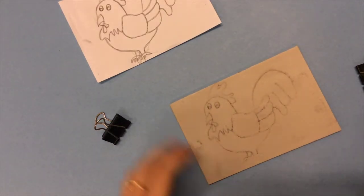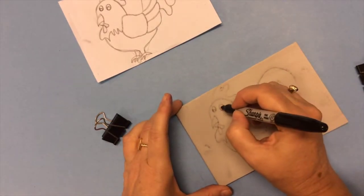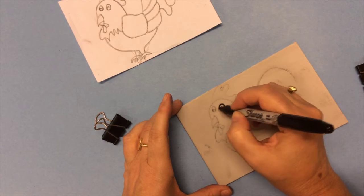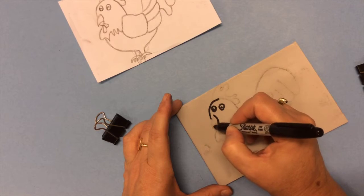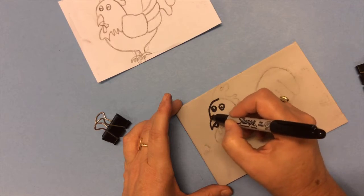Now your image has shown up on your lino block. Isn't that cool? But it is a little bit fuzzy, so I usually take a Sharpie and I go over the lines. You're going to want to make sure they're really clear because when you go to carve them, it's important that you can actually see them.